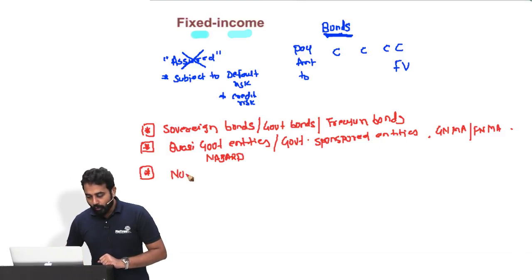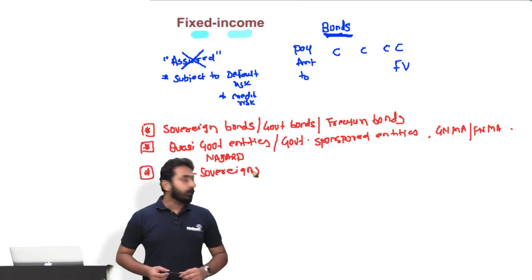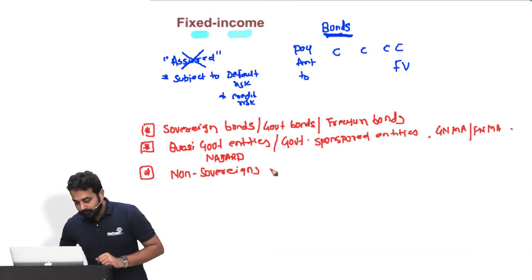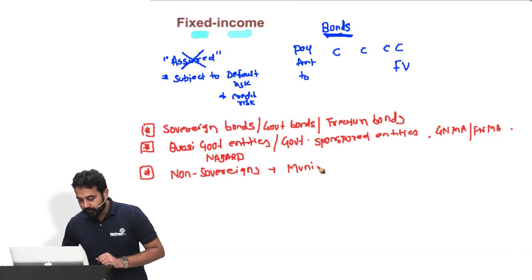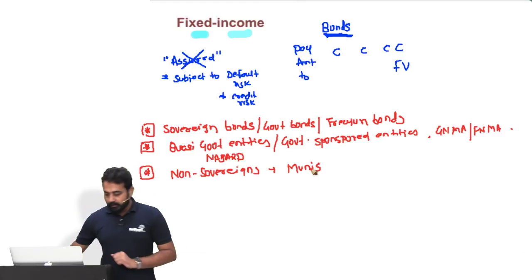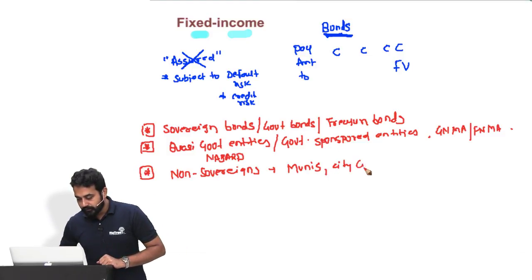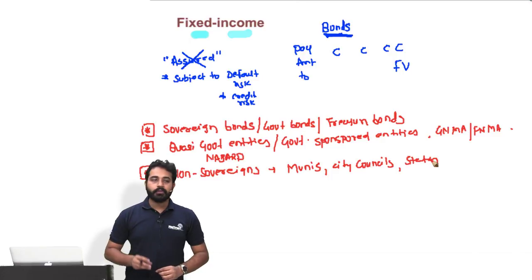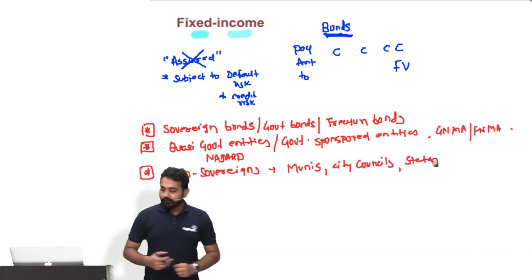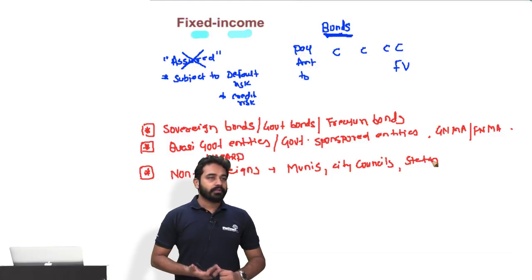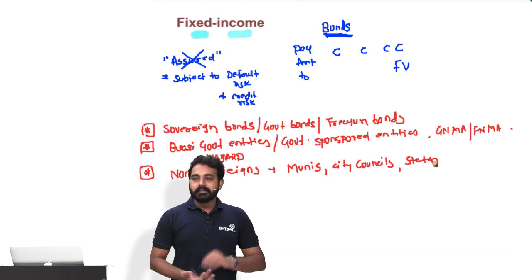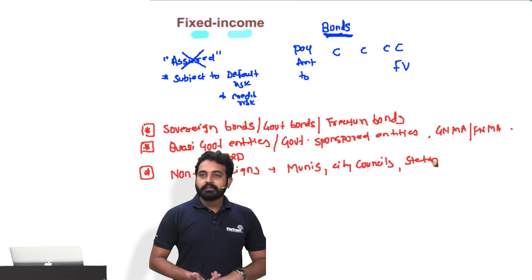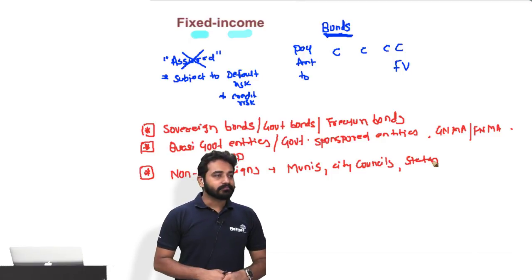We also have non-sovereigns — bonds issued by municipal corporations, also called muni bonds, or bonds issued by city councils or states: governments below the main central government. In the US this is a very popular structure where many municipalities and city councils issue bonds. Do we have a similar structure in India?